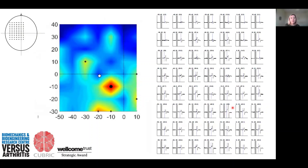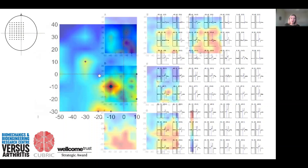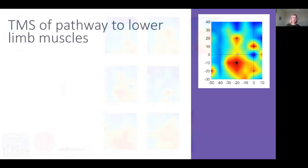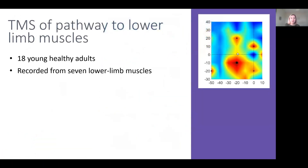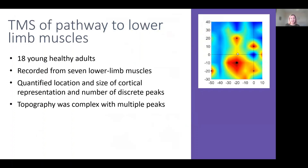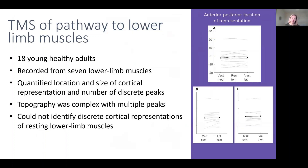We can make those responses into a heat map — this big red area shows the largest response, and that's where we see the biggest activation. I did this for lots of muscles in the lower limb and made lots of different heat maps in 18 young healthy adults from seven lower limb muscles, looking at the size and how the muscles are represented in the cortex. The conclusion is that we can stimulate these muscles, and also that the topography — the way they're represented — is complex, with multiple peaks, meaning there are probably multiple places in the cortex that can send signals down to those muscles.